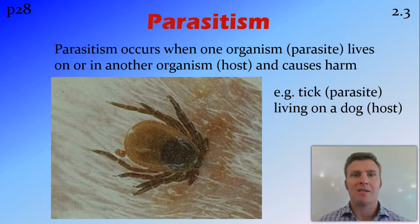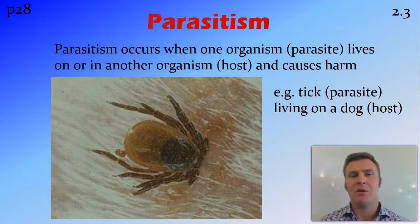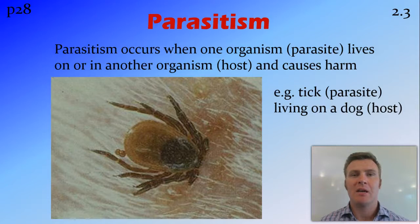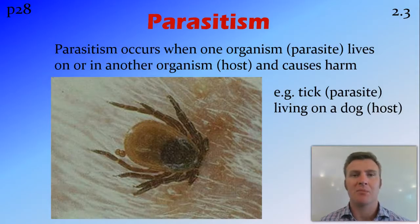The first one is parasitism, which occurs when one organism called a parasite lives on or in another organism called the host, and causes harm to the host — that's the important part. An example is a tick, which is a parasite that lives on a dog and irritates its skin. This harm can range from minor irritation, like ticks or fleas, to actually killing the host, though it's not in the parasite's interest to kill the host since it would then need to find somewhere else to live.